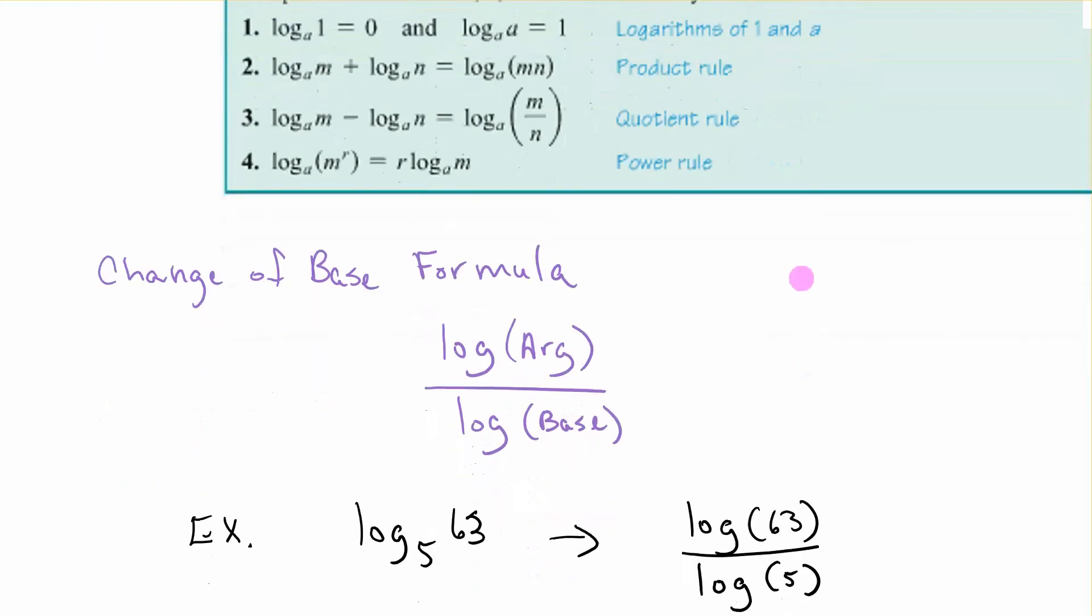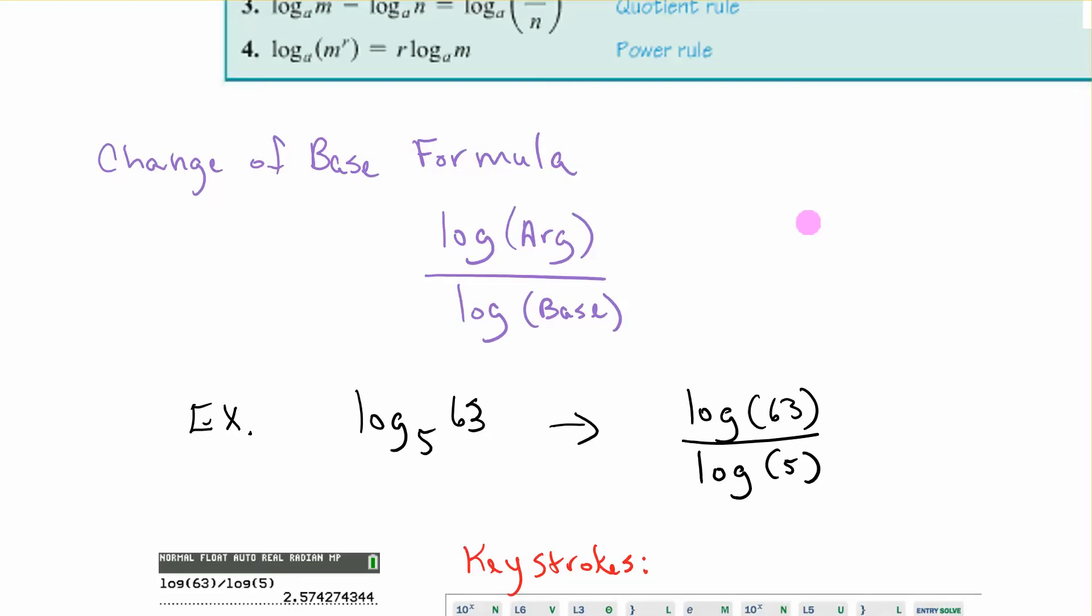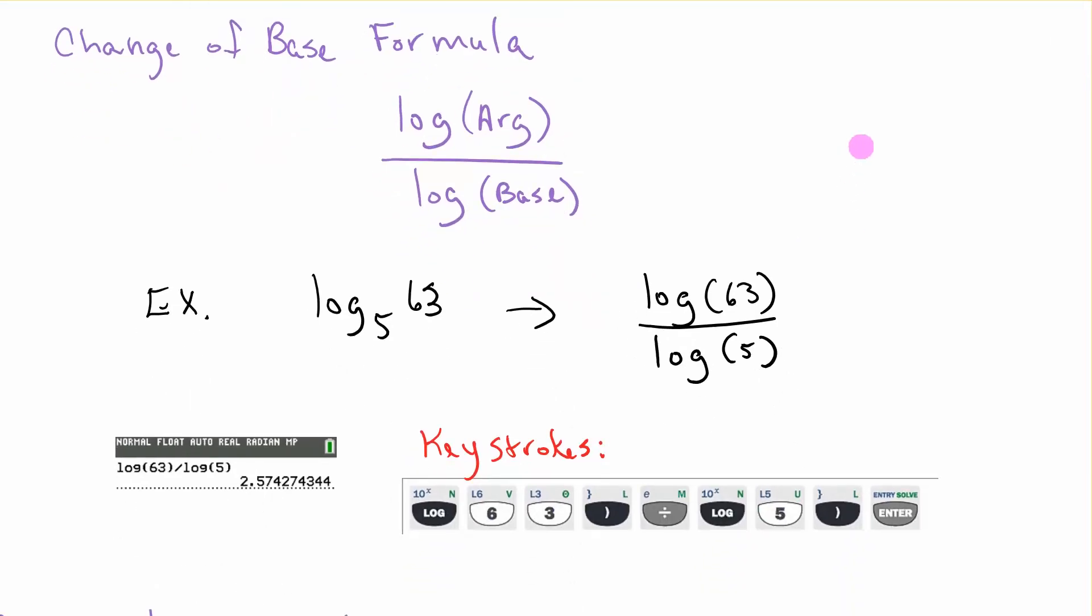The change of base formula. When we want to do something on the calculator, we don't have a base 5 key. On your calculator, your log key has a base of 10. If you needed to find log base 5 of 63, the formula says take the log of the argument and divide it by the log of the base. So we would do log of 63 divided by log of 5. Here I've shown you how to do that on the calculator and the exact keys that you hit are listed there.